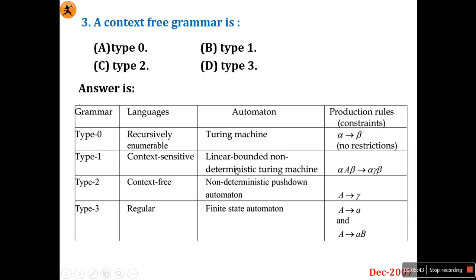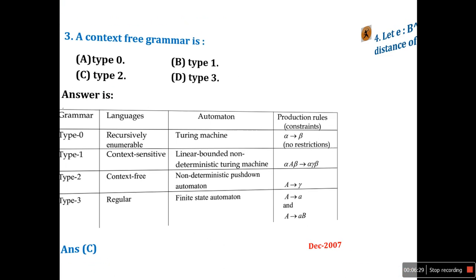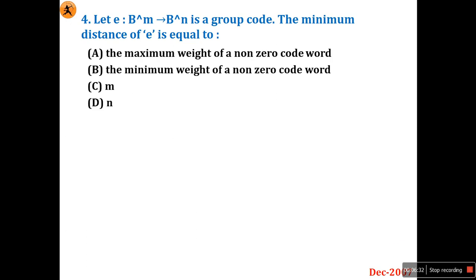Type 1 is context-sensitive grammar, read by a linear bounded non-deterministic Turing machine. Type 2 is context-free grammar, read by a non-deterministic pushdown automaton. Type 3 is regular grammar, read by a finite automaton. So a context-free grammar is Type 2 — straightforward if you know this table.